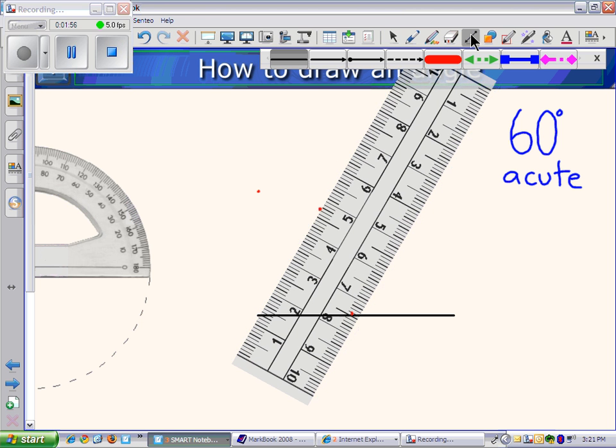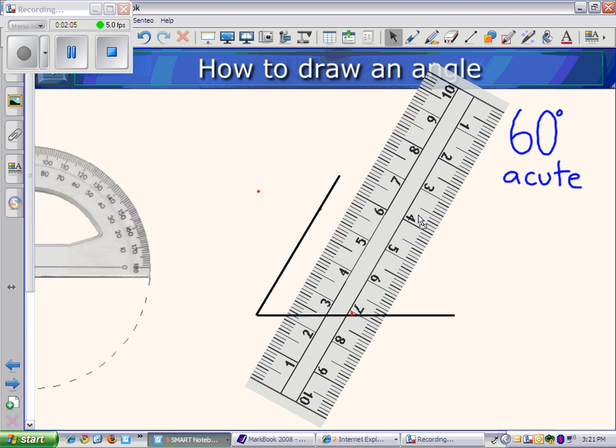And now we draw a straight line going through the dot we drew. And now we remove our ruler.